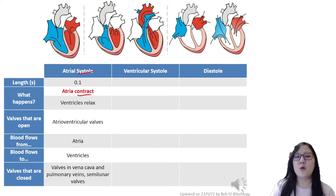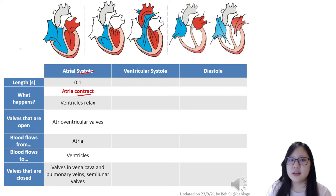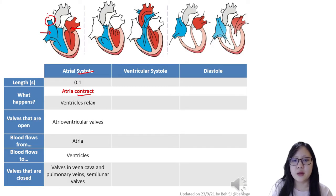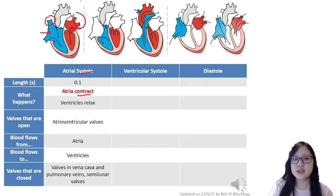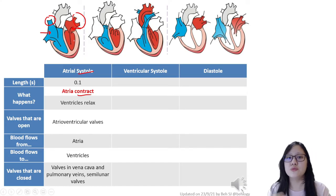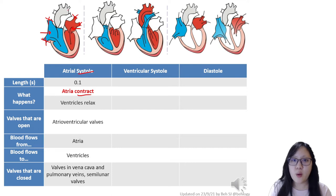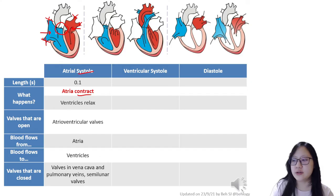During atrial systole, the valves at the vena cava and pulmonary veins close, preventing backflow of blood out of the heart. The semilunar valves are also closed during this phase and do not open until the next phase, ventricular systole.